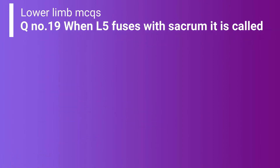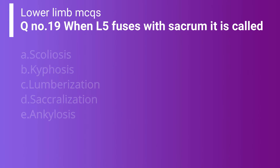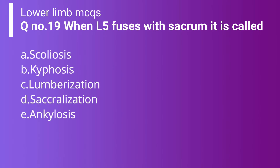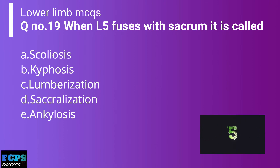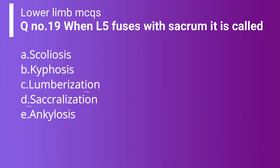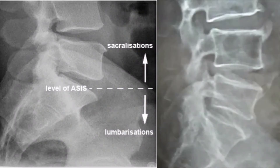Question 19: When L5 fuses with the sacrum, it is called: Option A: Scoliosis. Option B: Kyphosis. Option C: Lumbarization. Option D: Sacralization. Option E: Ankylosis. The correct answer is Option D — sacralization of the lumbar vertebra.